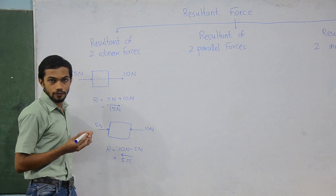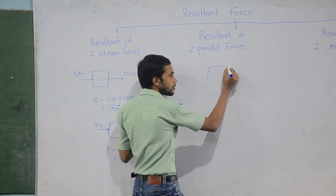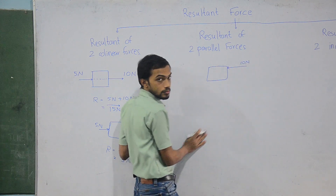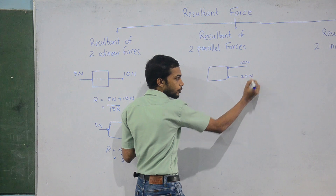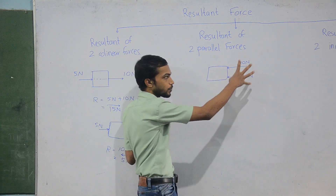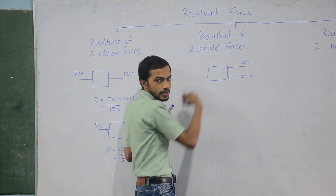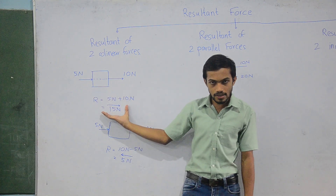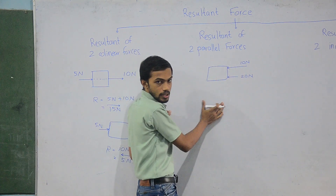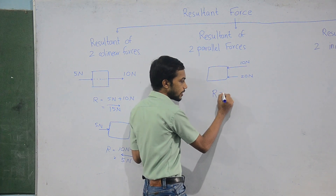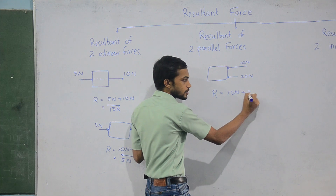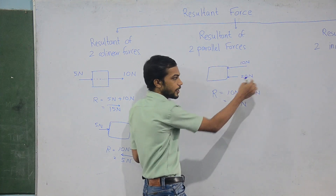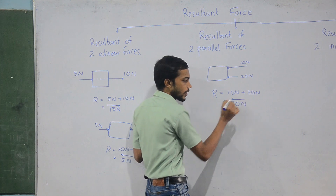Moving on to resultant of two parallel forces. If one person applies 10 newtons and another applies 20 newtons, and both forces act in the same direction, you add them to get the resultant. So 10 newtons plus 20 newtons gives 30 newtons, and the direction is the same as both forces — towards the left.